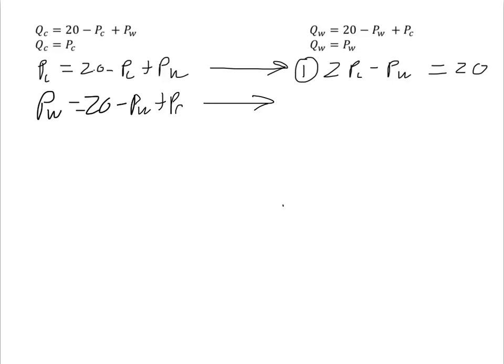So using the same format, I get negative PC plus 2PW equals 20. The idea of the elimination method is to transform one of the equations and then add the two together to eliminate one of the two variables.